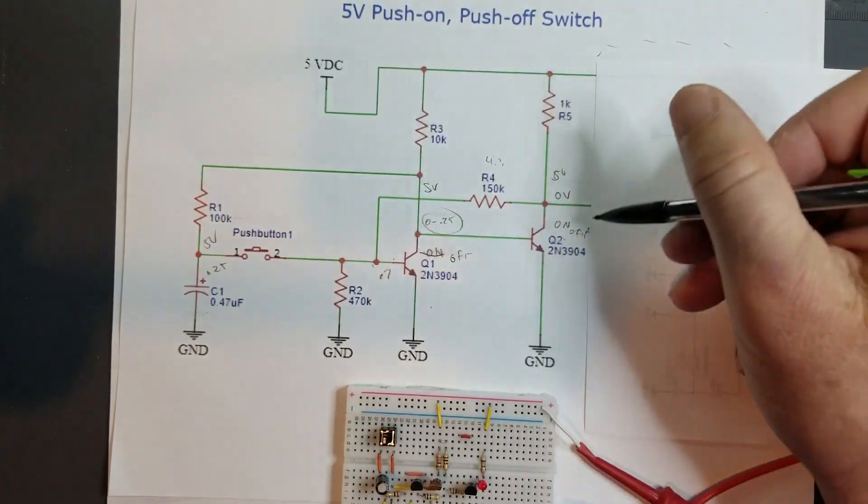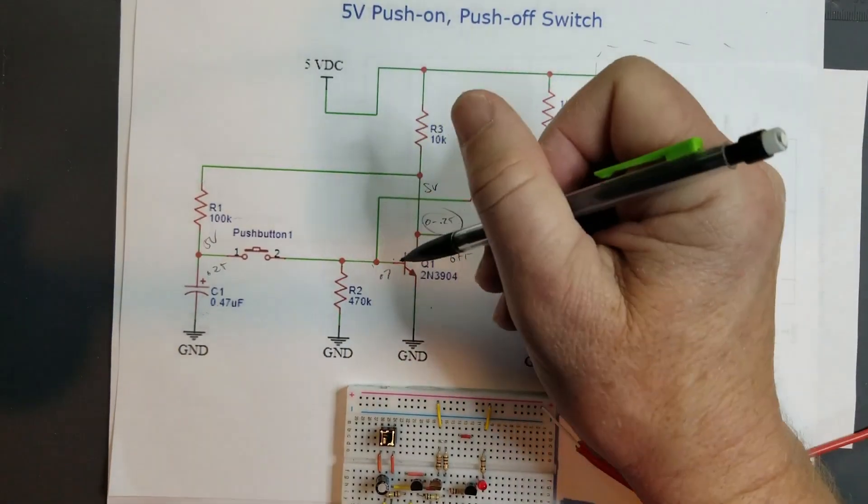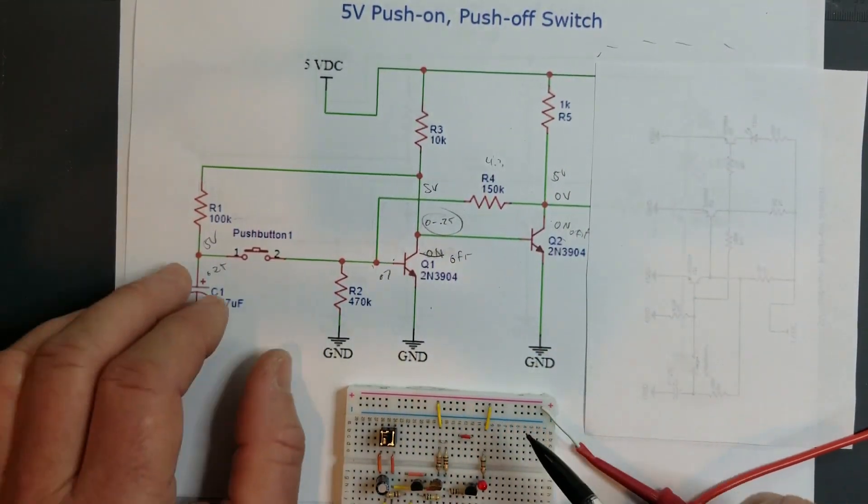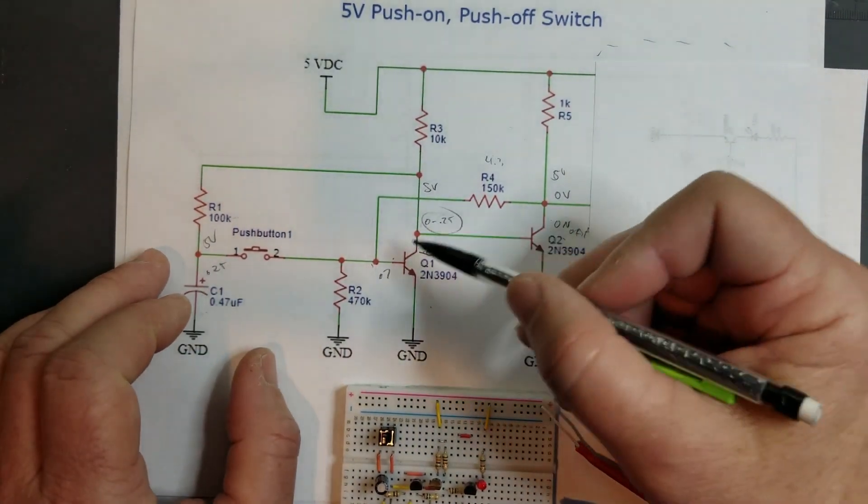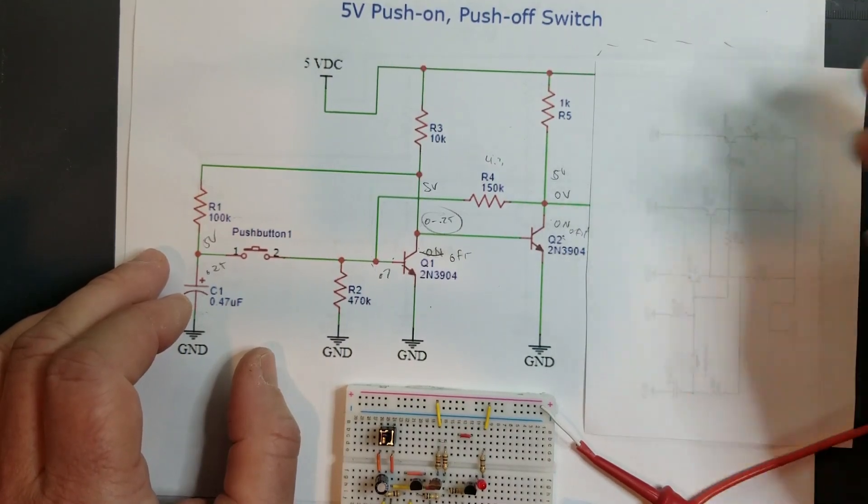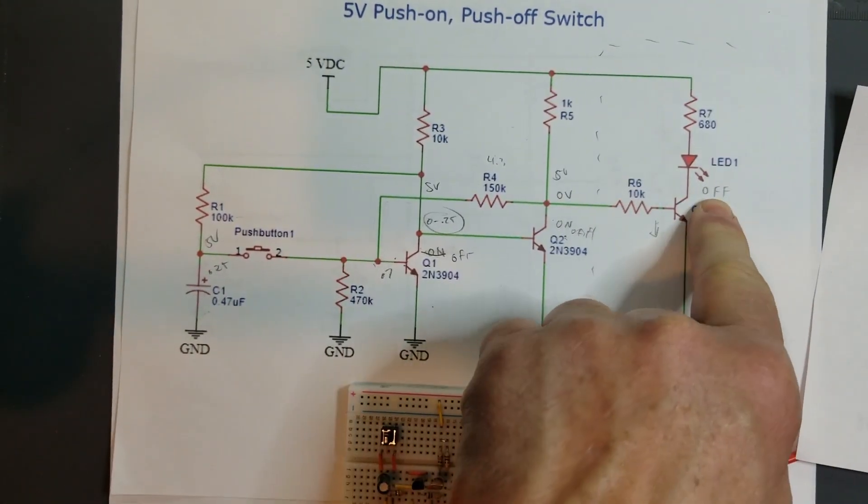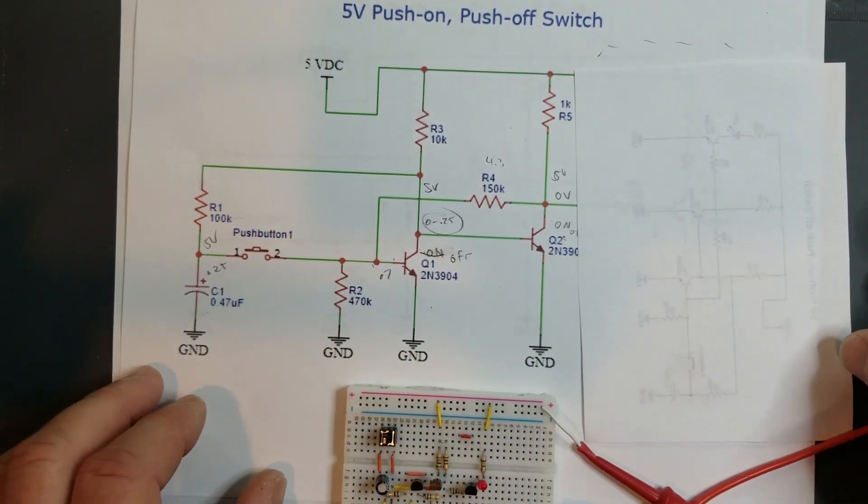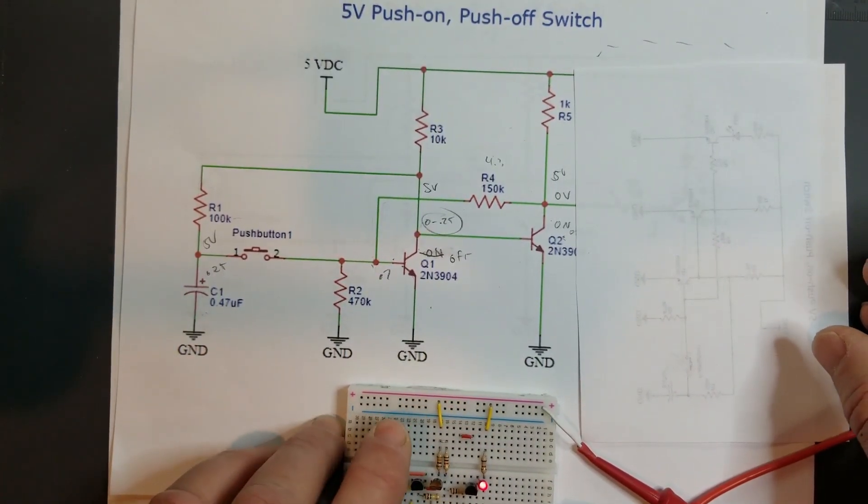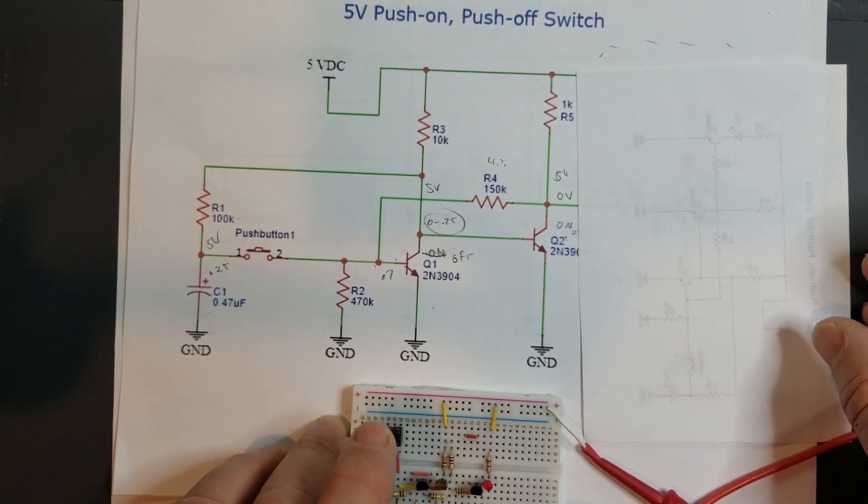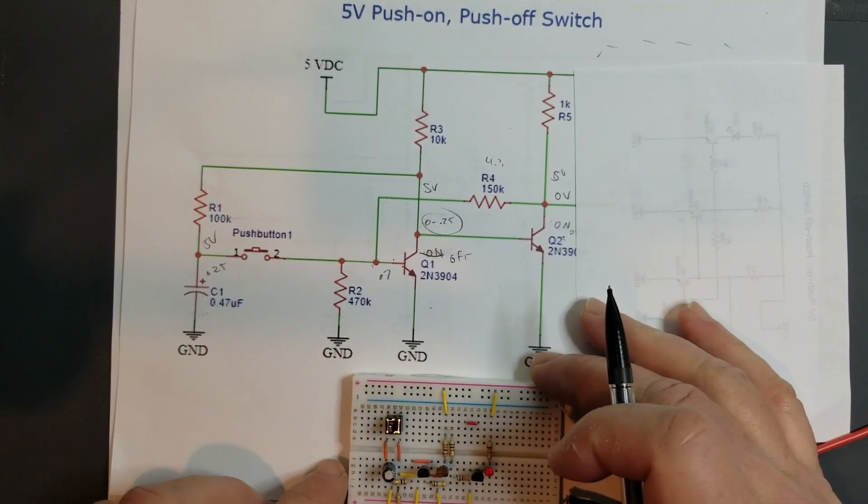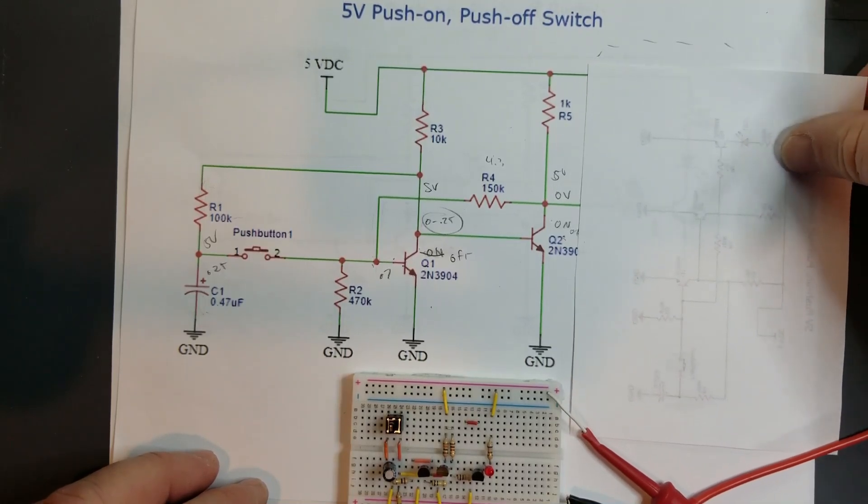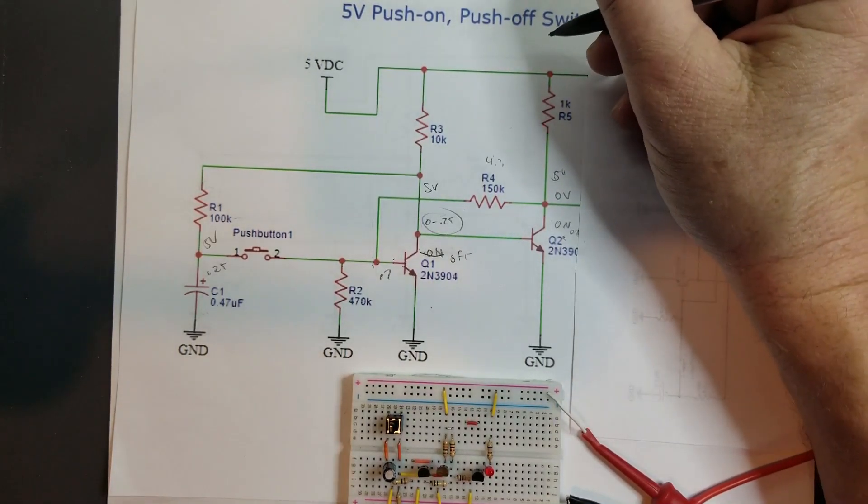This transistor is on. It keeps this low because this voltage is low again, and it latches the circuit again in this new state to where this transistor is off, this one is on, and this one is off, and that LED is off. And then the cycle continues. So that's how that circuit works.